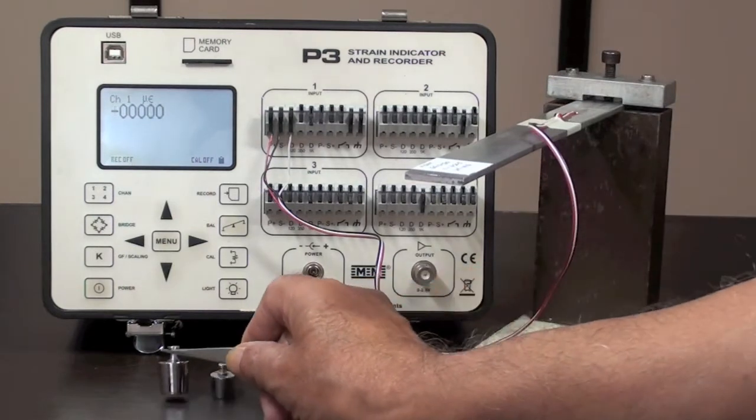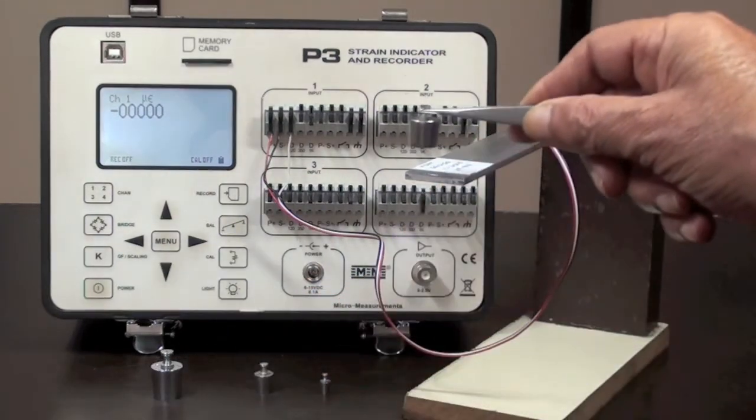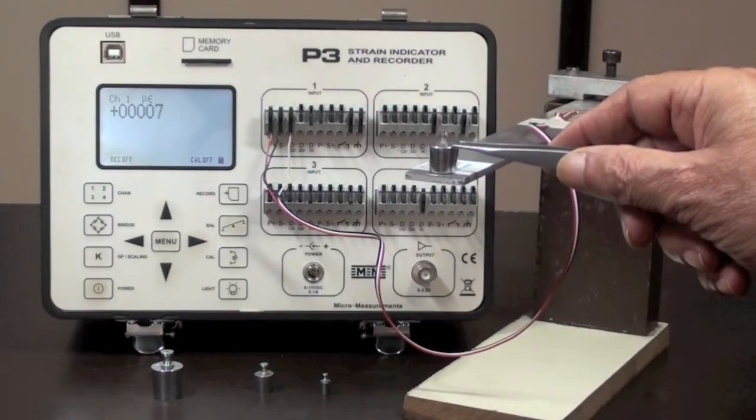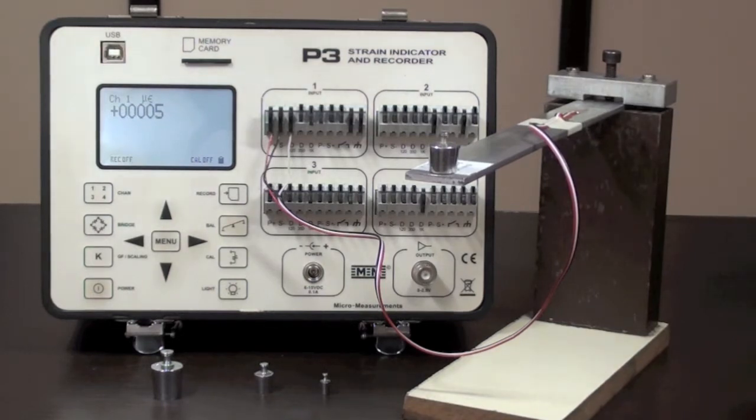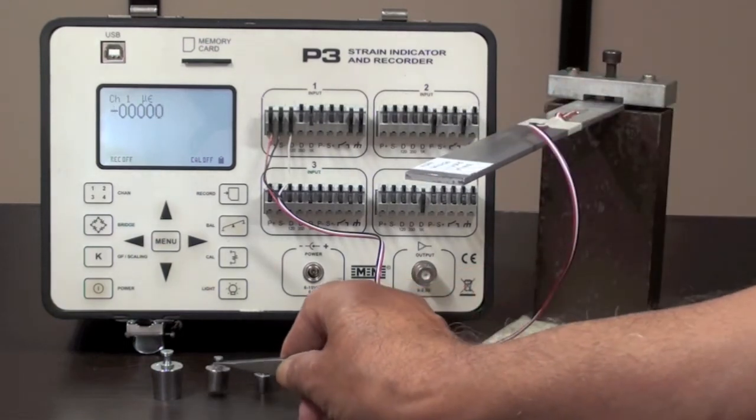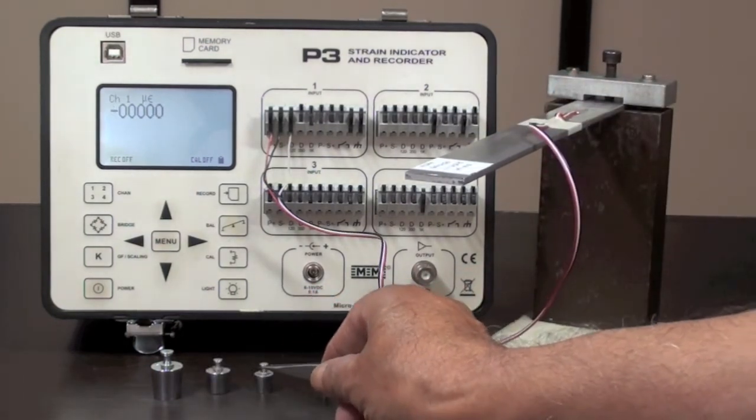For 10 grams weight, the reading should be 5.5 microstrain. For 5 grams weight, it should be 2.75 microstrain.